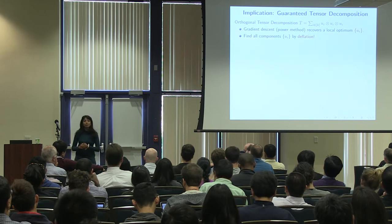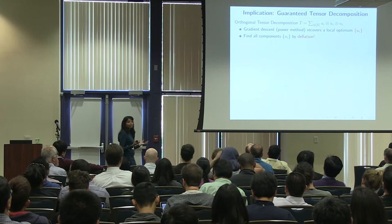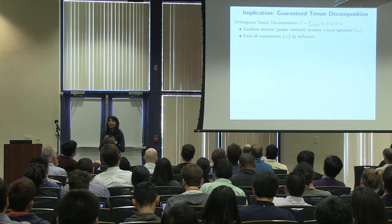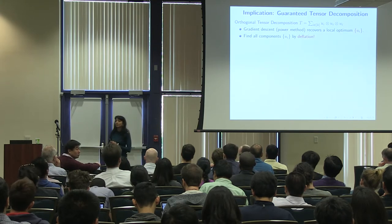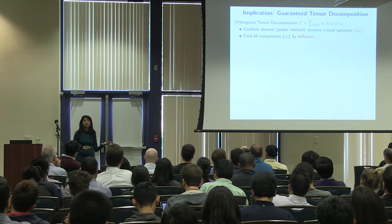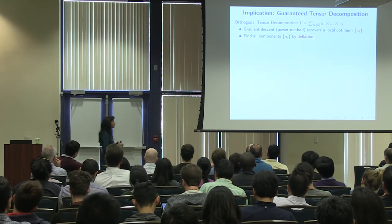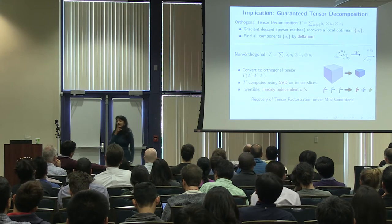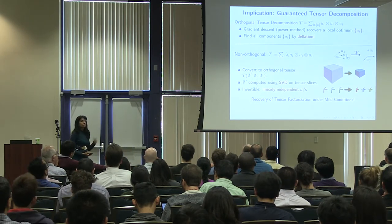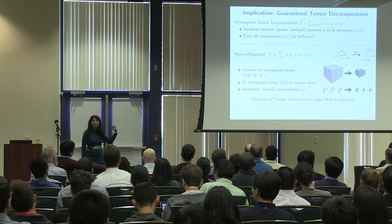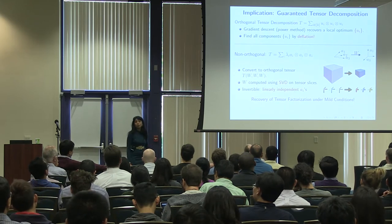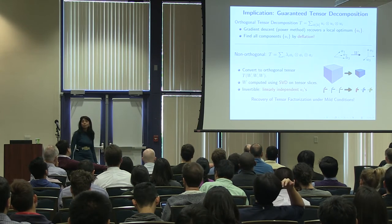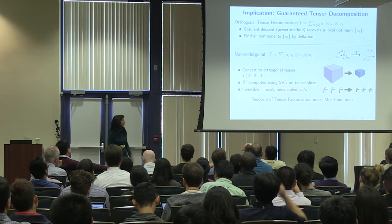For orthogonal tensors, we can find the decomposition correctly. But tensors are in fact much more powerful than matrices. Tensors can have decompositions where the representation need not be orthogonal, and can have a lot more components than is possible in a matrix. Can we expand the class of tensors for which we can find the decomposition? In fact that is the case through some additional simple operations.